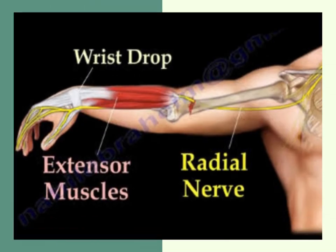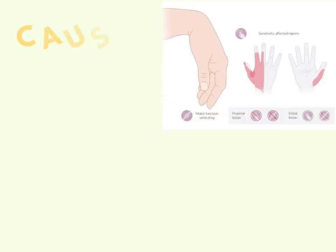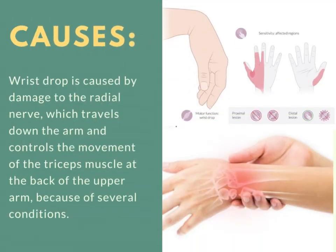As you can see, the path of the radial nerve is very crucial for the extensors of the forearm, wrist, and digits. Whenever this radial nerve is damaged, extension of the wrist is compromised. Wrist drop is caused by damage to the radial nerve, which travels to the arm and controls movement of the tricep muscles at the back of the upper arm.